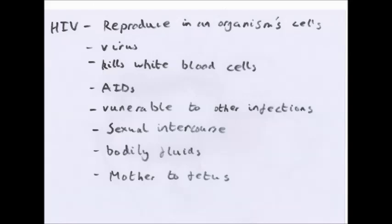Worldwide, as of 2005, 45 million people live with HIV. Every year, 5 million people are newly infected. By the end of 2005, nearly 30 million had died from it. It is particularly prominent in sub-Saharan Africa, but also quite a lot in Asia.